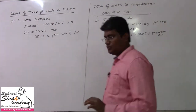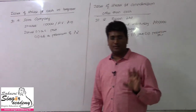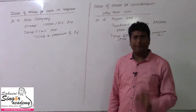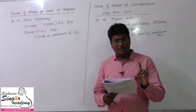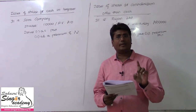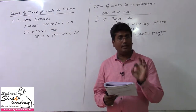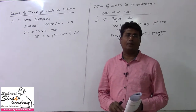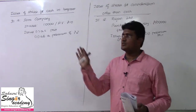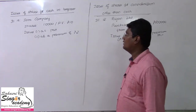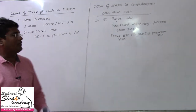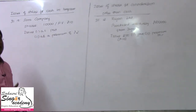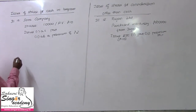Now, the last two illustrations in the Company Accounts chapter. Issue of shares for cash in lump sum. Instead of installments, when collected in one lump sum, how does it work? In lump sum, you collect only the application money at once. You pass the entry as if collecting application money.